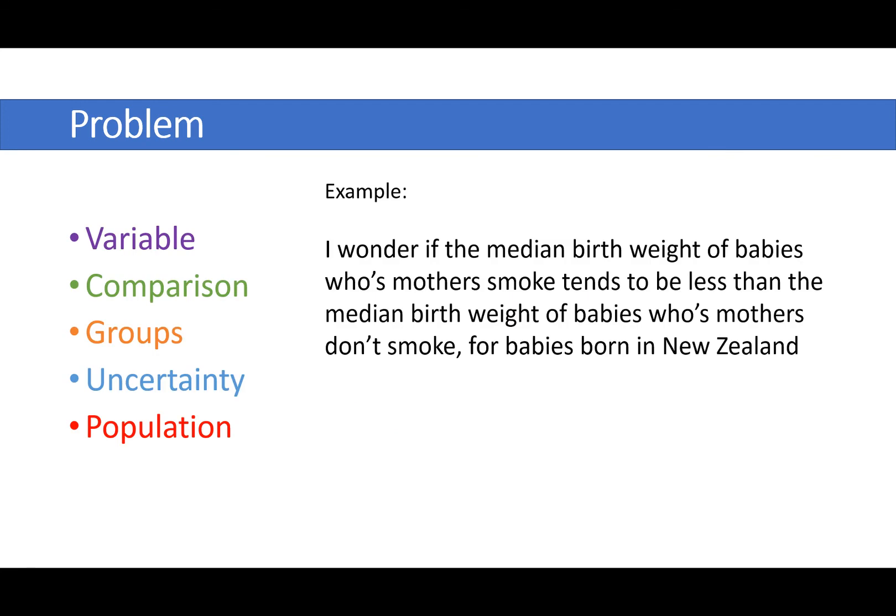Okay, so here's an example. I wonder if the median birth weight of babies whose mothers smoke tends to be less than the median birth weight of babies whose mothers don't smoke for babies born in New Zealand. Let's break that down into the five parts that should be there. So the variable is the median birth weight. The comparison that we're making is a less than. The two groups we're looking at are those babies whose mothers smoked and those whose mothers didn't smoke. The uncertainty is right there with the tends to. And the population that we're talking about is babies born in New Zealand.